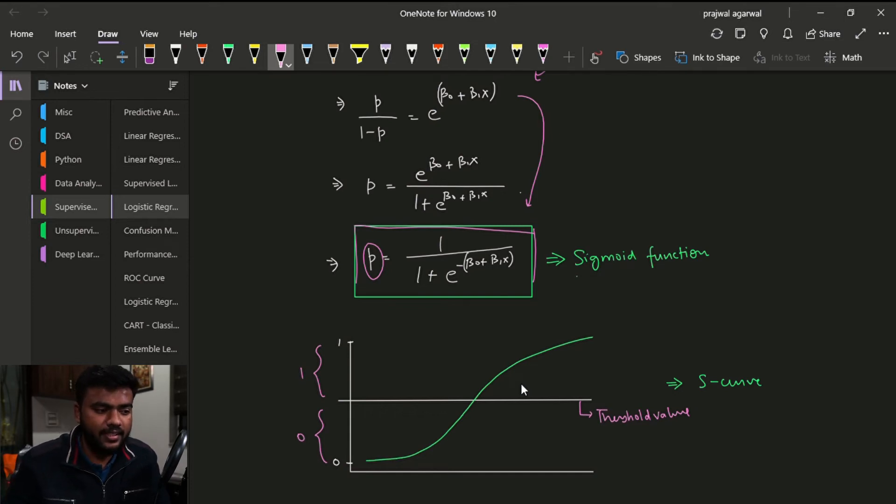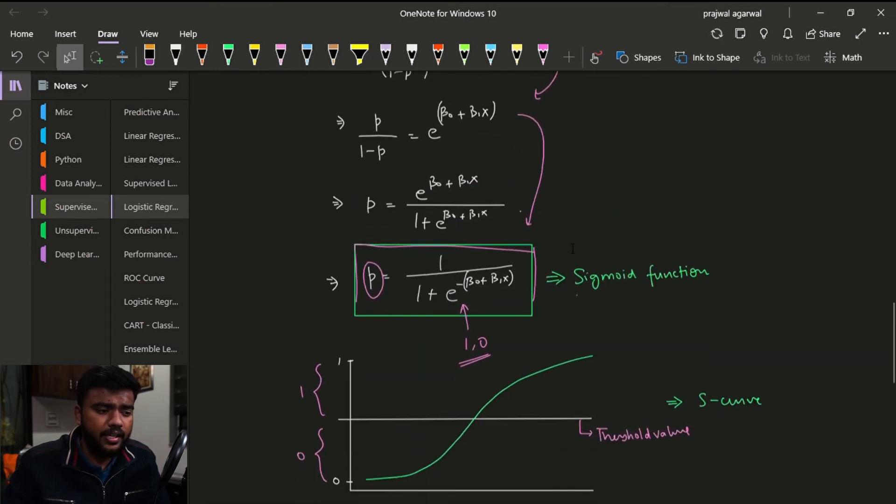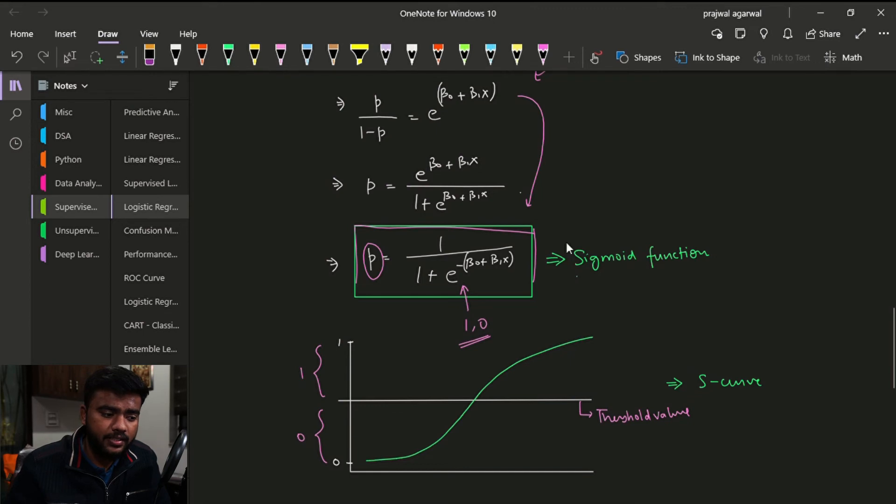So since p was the probability, then it is very clear that this equation is going to give a value which will lie between zero and one. This equation is going to give a probability of event happening, and hence the value is going to lie between zero and one. And this is the expression that we get, and this expression is also known as the sigmoid function. The expression is 1 over 1 plus e to the power minus z, and z is equal to b naught plus b1 x1.